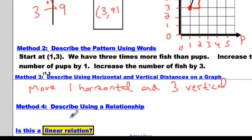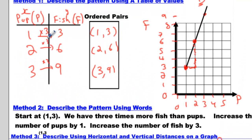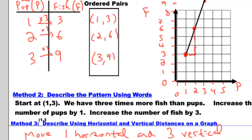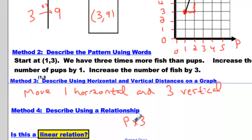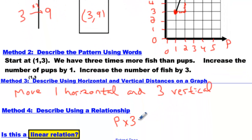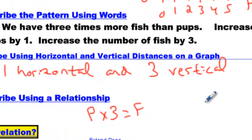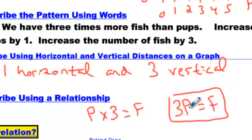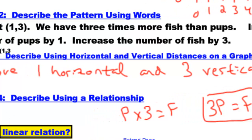Now we'll move to the fourth way, which is describing using a relationship. When I say relationship, I'm talking about multiplying or adding or subtracting some numbers. This is easy to see because we are taking the pup amount and multiplying it by 3, and when we do that we get the number of fish. We don't write the times sign — we put the 3 first and the p second, meaning they're being multiplied, and that equals f. So 3p = f. That's the relationship. And we already answered the last one — yes, it is linear.